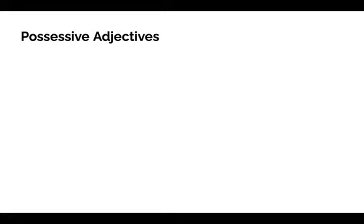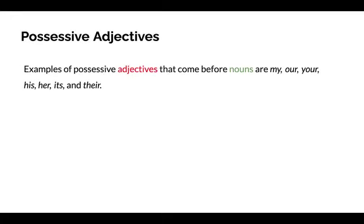Possessive adjectives are another way of showing ownership. Examples of possessive adjectives that come before nouns are my, our, your, his, her, its, and their.